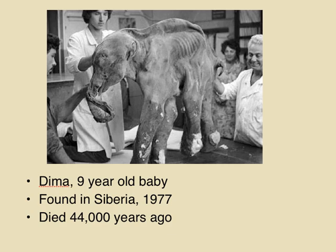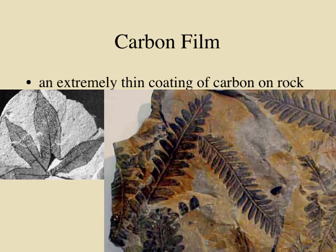The fifth type is a carbon film, which is an extremely thin coating of carbon left behind from when the thing was alive. That carbon actually adheres to the rock and leaves a small film behind. This tends to occur most often with leaf prints.